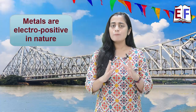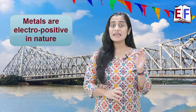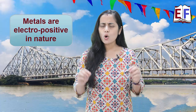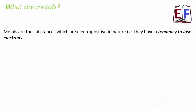What are metals? Metals are those substances which are electropositive in nature — that is, they always have a tendency to lose electrons. Let us understand what we mean by tendency to lose electrons. Let's take examples of a few elements.